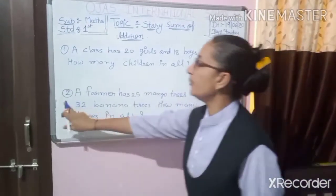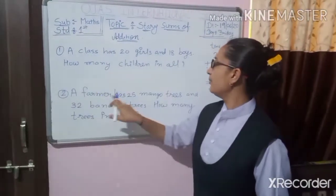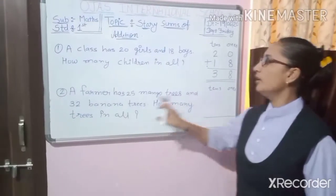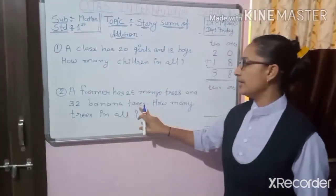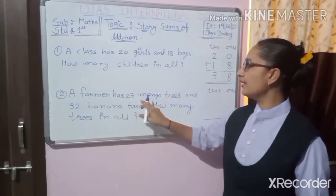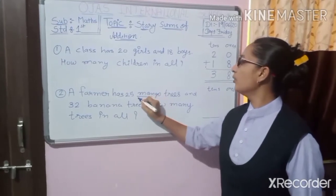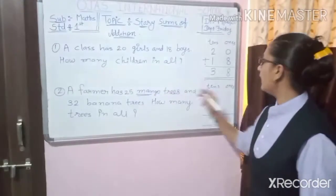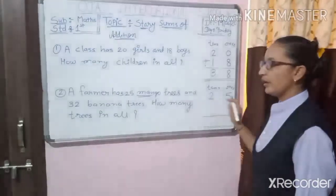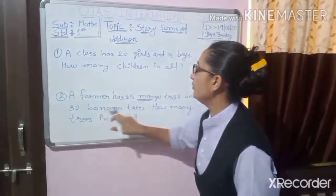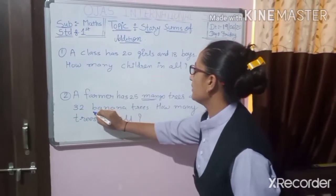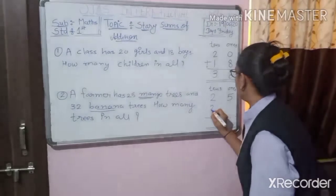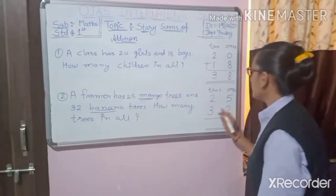Now sum number 2: A farmer has 25 mango trees and 32 banana trees. So first of all, which trees are there? Mango. So what we have to write here? 2 tens and 5 ones — 25.